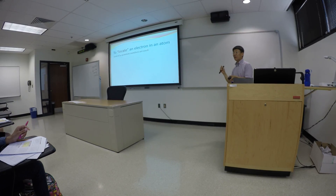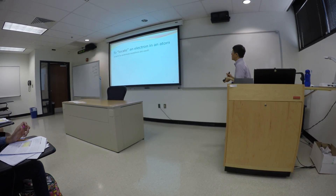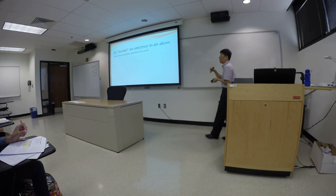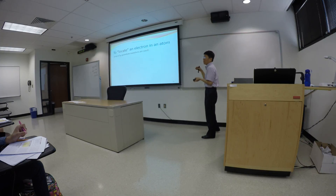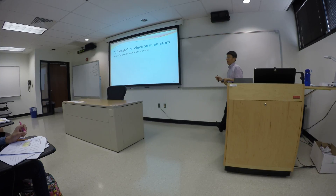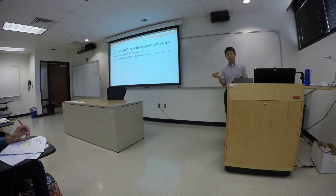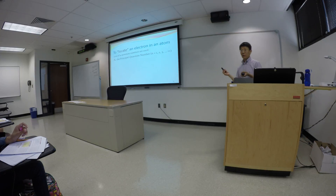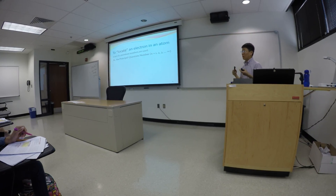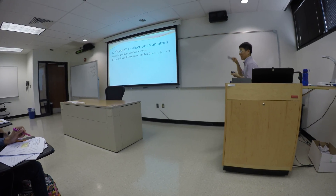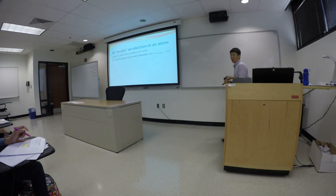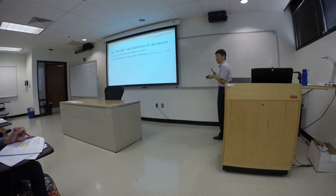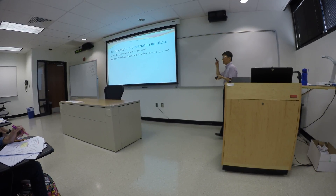We have four sets of quantum numbers. What's important is the first three quantum numbers in the set, namely the principal quantum number n. This n is the same n that we talked about in that last equation that I need you to memorize for the first learning objective.